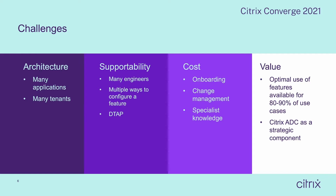As many of you will know, on a Citrix ADC there are often multiple ways to configure a feature or a request. We had to watch out how we would structure the implementation of the platform so that we could support it easily. Moreover, we had to take into account that they didn't only have a production platform — they were really moving from development to testing to acceptance and production, so we had to support all four environments independently, even if they were running on the same ADC instance.